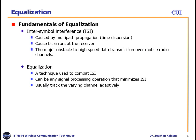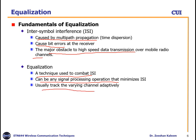The fundamentals of equalization: inter-symbol interference is caused by multipath propagation and time dispersion, and causes bit errors at the receiver. It is the major obstacle to high-speed data transmission over mobile radio channels. Equalization is a technique used to combat ISI — it can be any signal processing operation that minimizes ISI and usually tracks the varying channel adaptively.